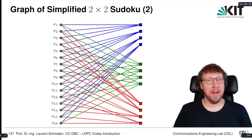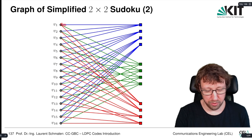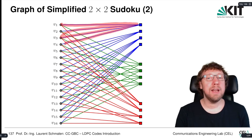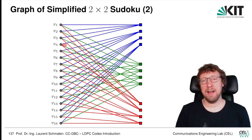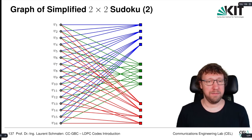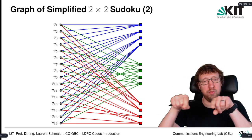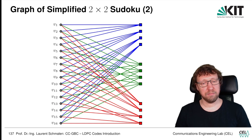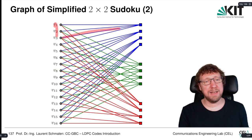We can define variable nodes and constraint nodes and have a Tanner graph. We have 16 variable nodes in our Sudoku. We constrain variable nodes v1, v2, v3, v4 to have distinct values — a different constraint than in LDPC codes, where the constraint is that the sum or number of ones must be even. Here the constraint is that the numbers are all different. We have row constraints, column constraints, and block constraints, so that in each 2×2 square the numbers are different.